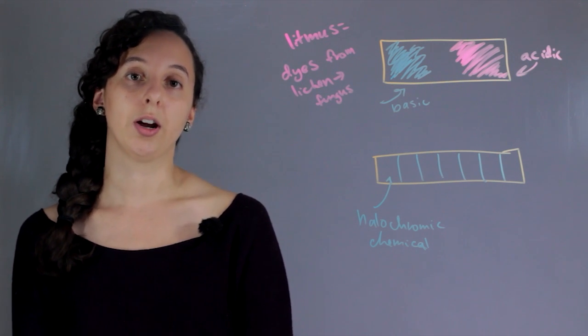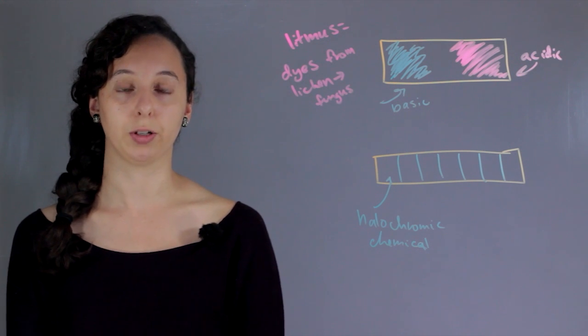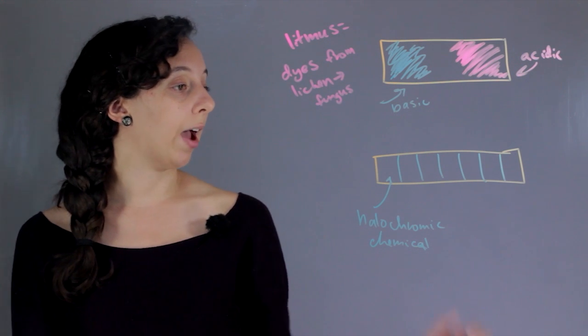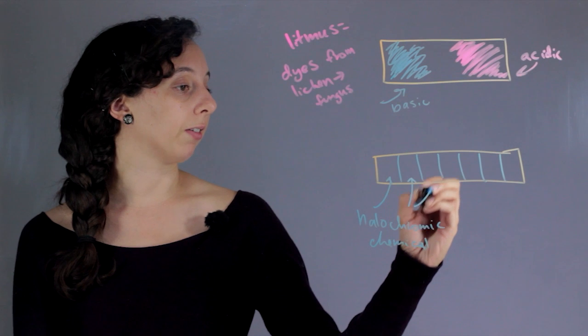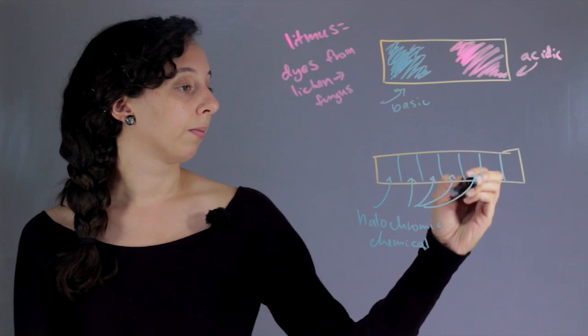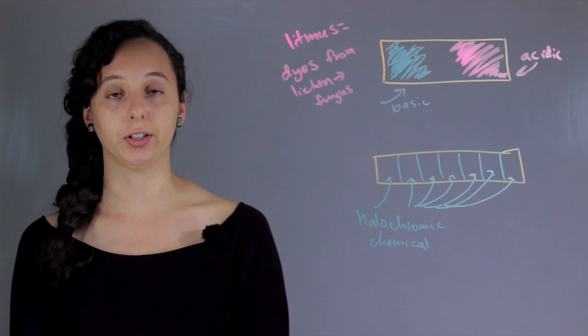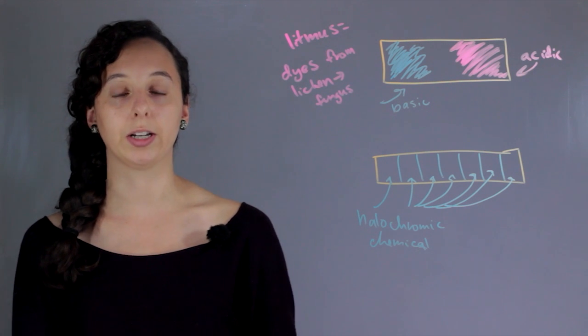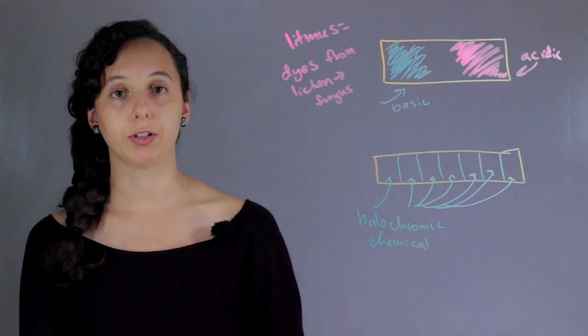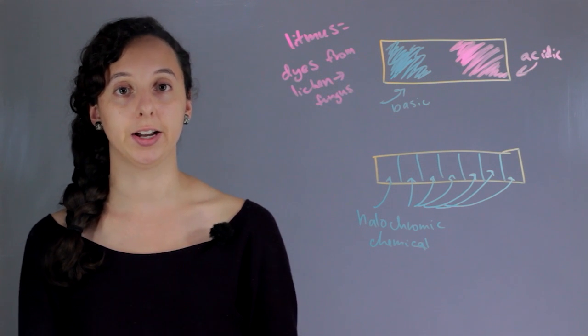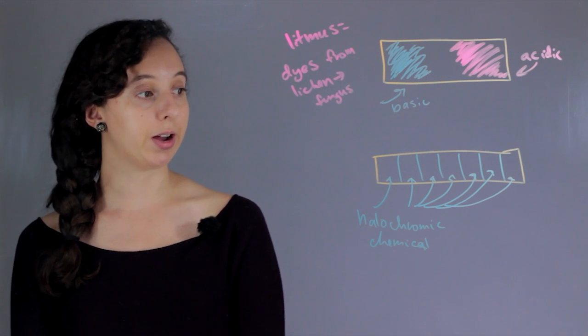So the pH strips that you use are going to vary from the pH strips someone else is using. So every single square is a different chemical. And each chemical will have its own specific pH that it tests. That's why you have to look at a key and figure out which ones have turned and which ones haven't. And that way you can narrow it in to the exact pH that you're dealing with.